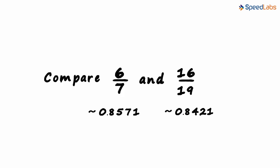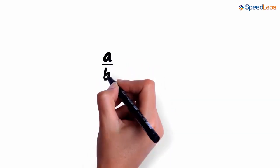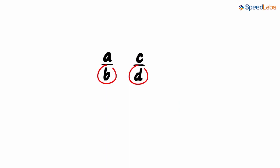Here, let's look at a simpler way to compare two rational numbers. Say we have two rational numbers A by B and C by D. We assume that the denominators B and D are positive integers.